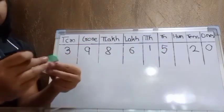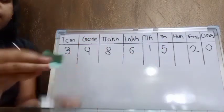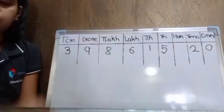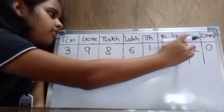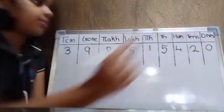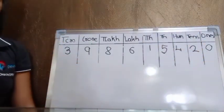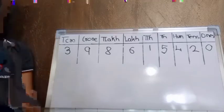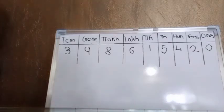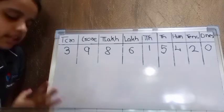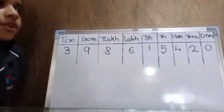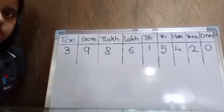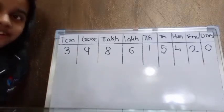Next is hundreds. In the hundreds place we have to write number 4. So the prepared table means the number name is 39 crore 86 lakhs 15,420.